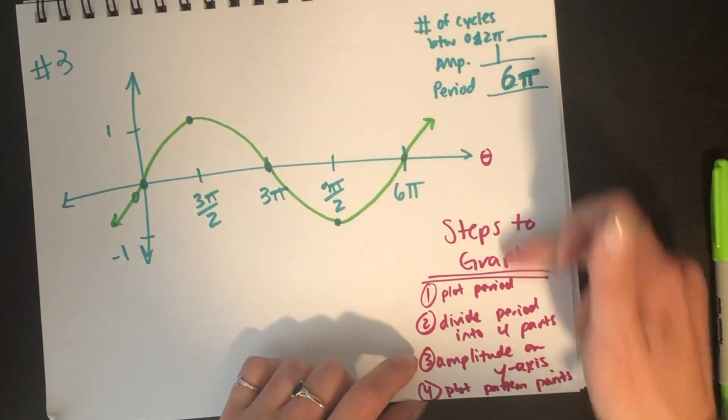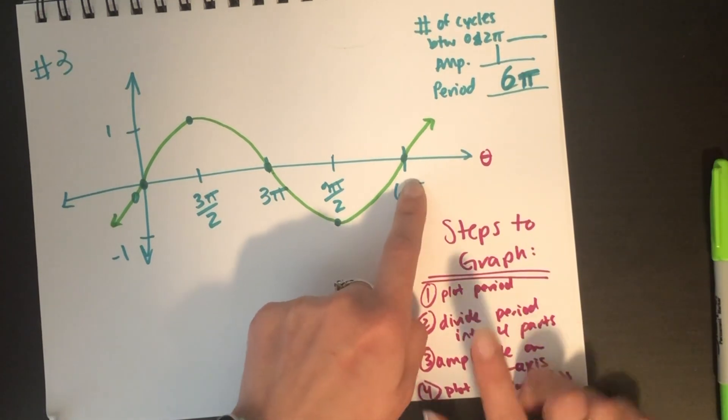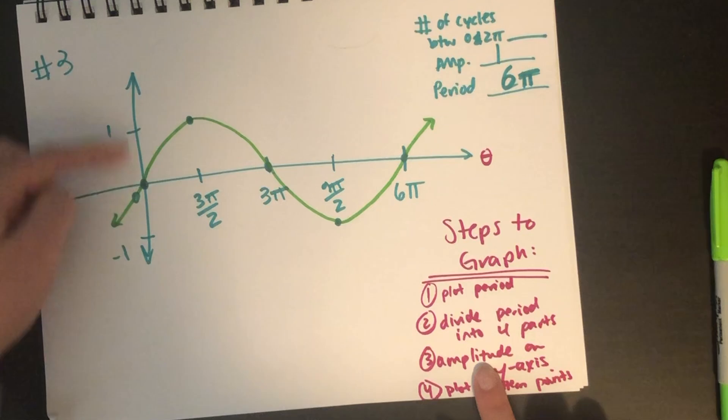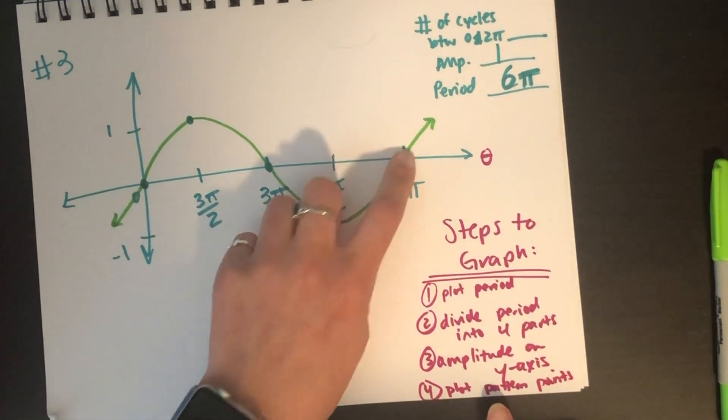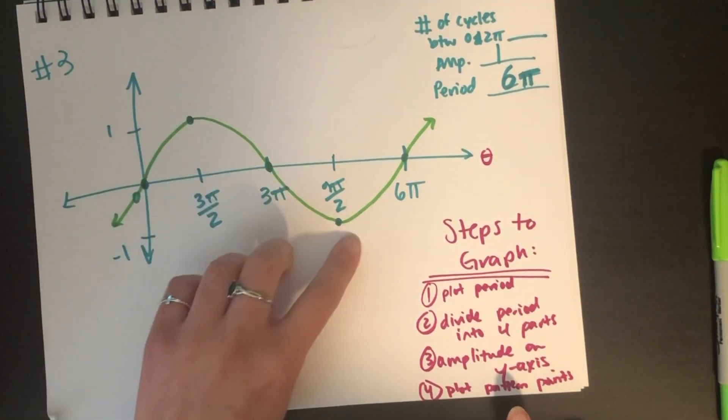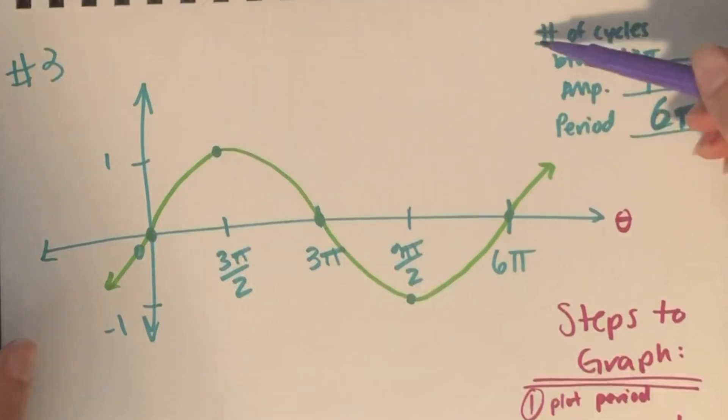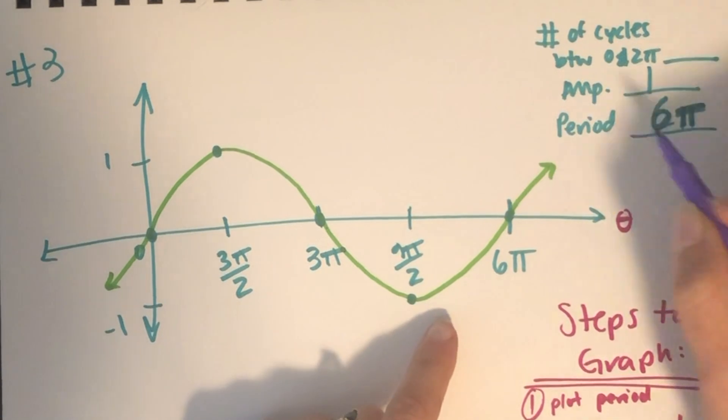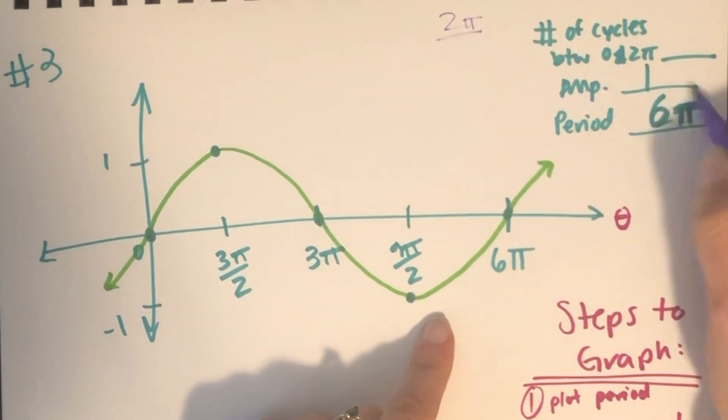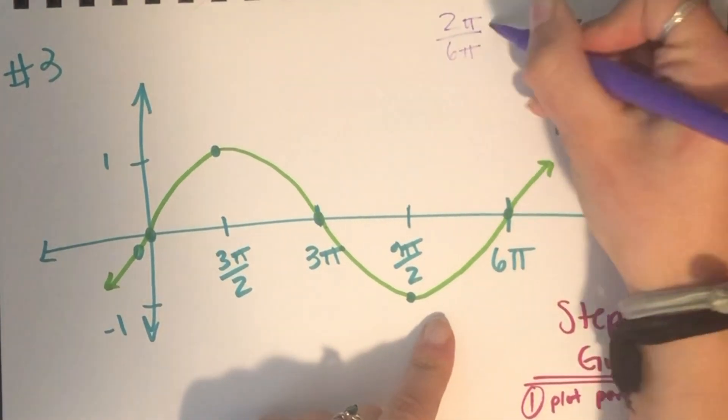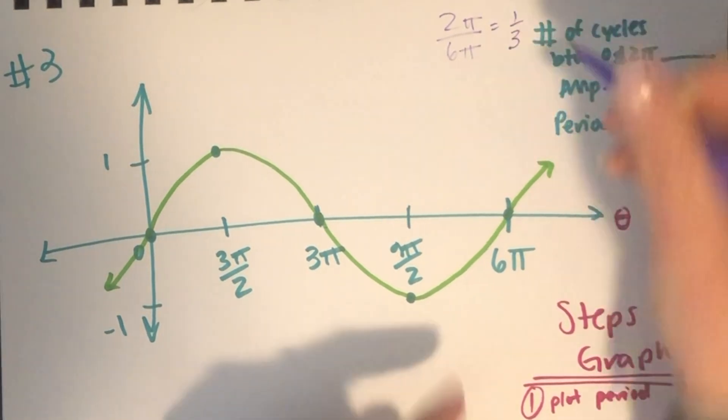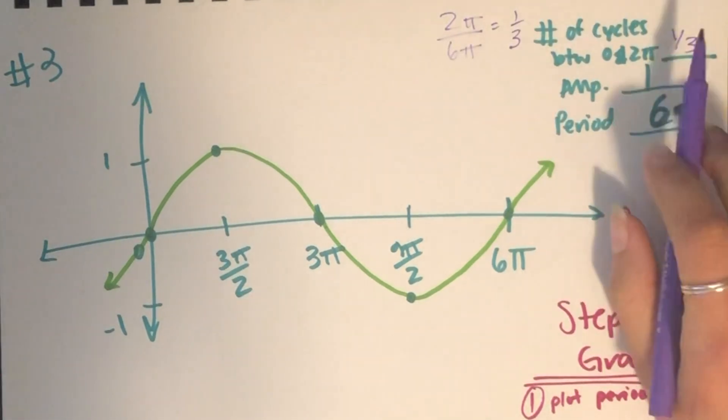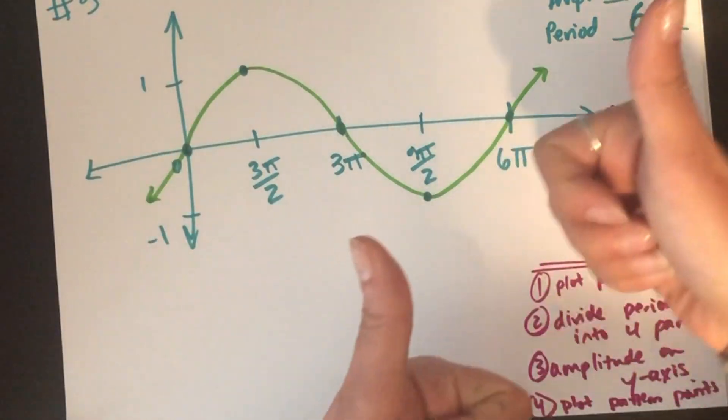Okay. So, to review our graphing steps, when we know the period, we plot the period at the end. We divide the period into four parts. Then, we label those four parts. Label our amplitude on the y-axis. And, finally, plot our sine pattern points. Zero high, zero low, zero. And, we have one cycle of sine. Okay. And, then, for number of cycles between zero and two pi, well, we could take our normal period, two pi, and divide that by our new period, six pi. And, we're going to get one-third. So, that means between zero and two pi, we're only seeing a third of a cycle. Let's see what Wilson has for us next.